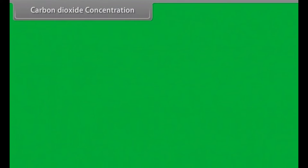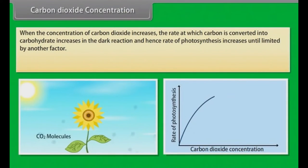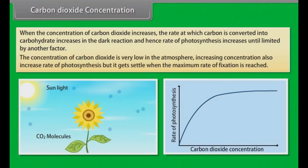Carbon Dioxide Concentration: When the concentration of carbon dioxide increases, the rate at which carbon is converted into carbohydrate increases in the dark reaction, and hence rate of photosynthesis increases until limited by another factor. The concentration of carbon dioxide is very low in the atmosphere. Increasing concentration also increases rate of photosynthesis, but it gets settled when the maximum rate of fixation is reached.